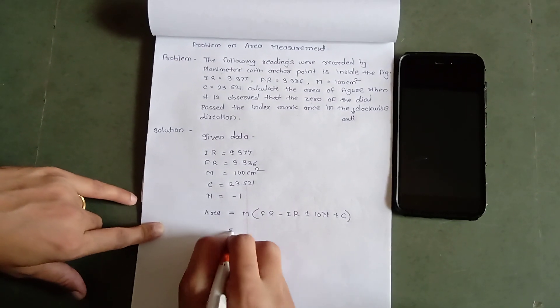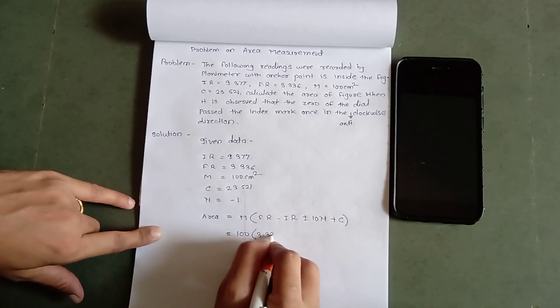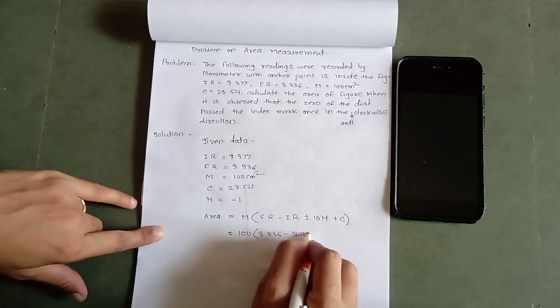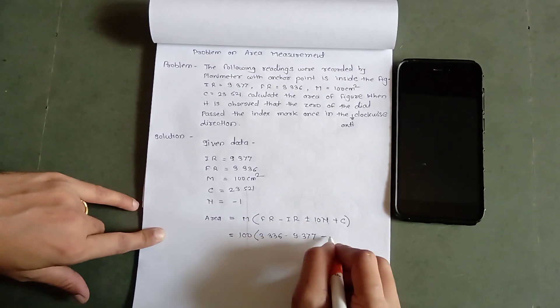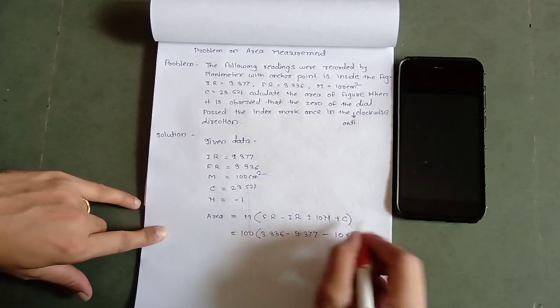We will substitute the values: M = 100, FR = 3.336, IR = 9.377, minus 10 into N that equals 1, plus C = 23.521.